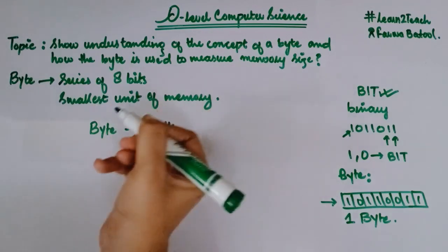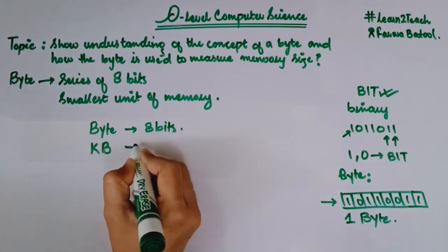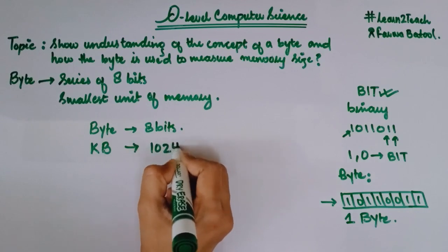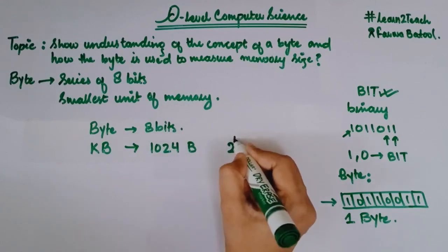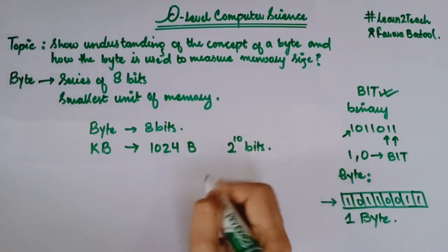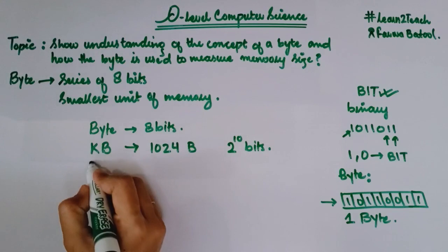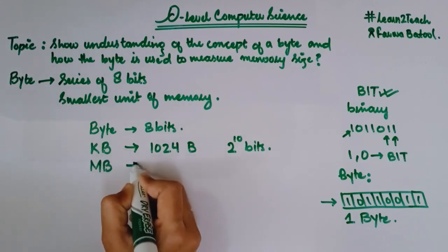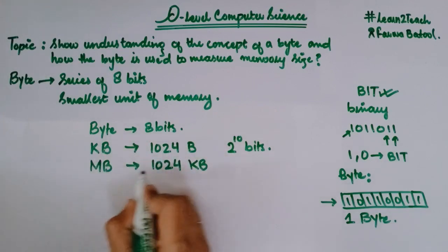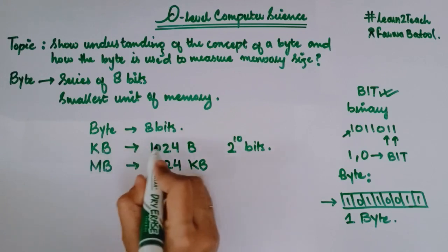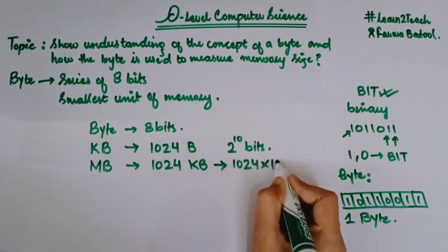Let me tell you the other units, and I am going to make a chart for all the memory units we usually measure in the computer. The smallest unit is a byte. After byte, I have KB — kilobyte — and it contains 1024 bytes, or in terms of bits, it corresponds to 2 raised to the power 10 bits. After kilobyte, I have megabyte. Megabyte is 1024 KB, or in other words, it is 1024 multiplied by 1024 bytes.